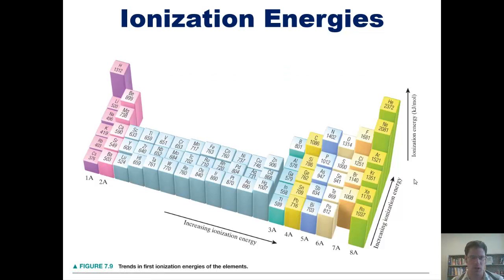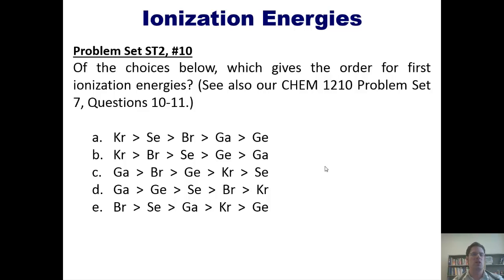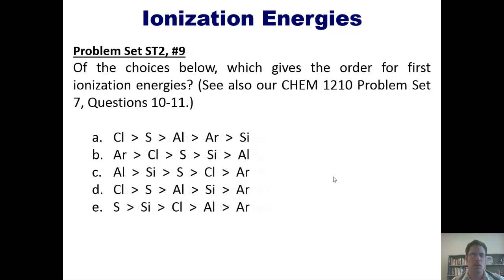That takes us to some practice questions, beginning with this one: of the choices below, which gives the proper order for the first ionization energies? We're sorting these elements from highest to lowest first ionization energy. I'm not going to work through this here, but I'll post a link to a separate video where I do a similar problem that you're welcome to consult. Here's another question — the same type but with a different set of elements. Once again, you're welcome to click the link for help if you need it.